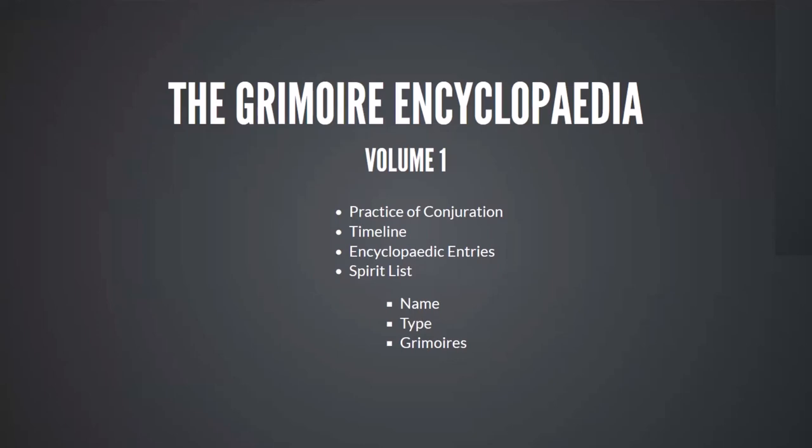Probably the earlier ones are more authentic than the later ones. So the timeline and the encyclopedic entries. And then there's the spirit list, which basically has three columns: the name of the spirit, the type — whether it's goetic or angelic or other things — and then the grimoires. The grimoires are going to be abbreviations, two or three letter abbreviations, so you'd have to learn which grimoire is associated with which one.